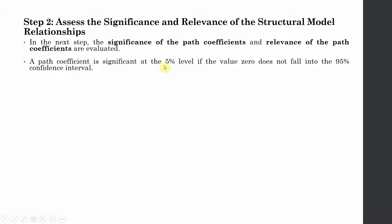A path coefficient is significant at the 5% level if the value zero does not fall in the 95% confidence interval. That is, there is no zero in between the 95% bias corrected confidence interval.